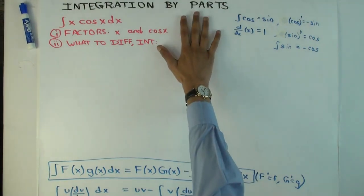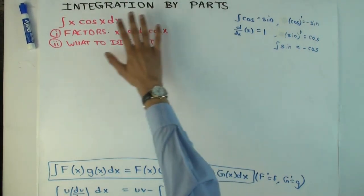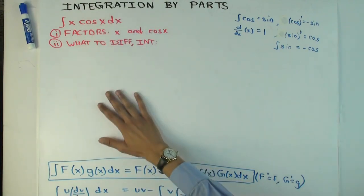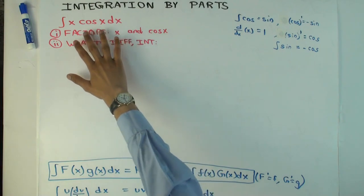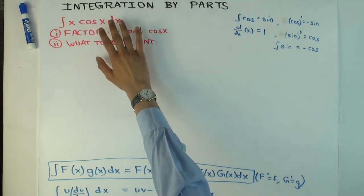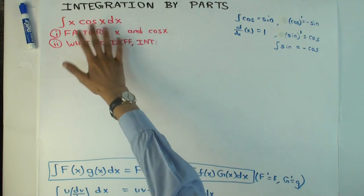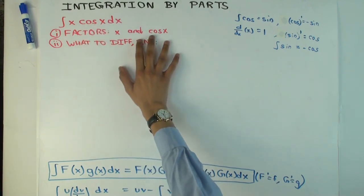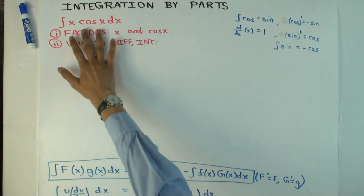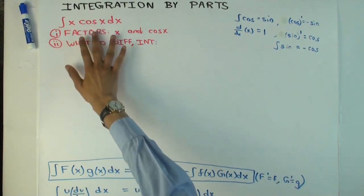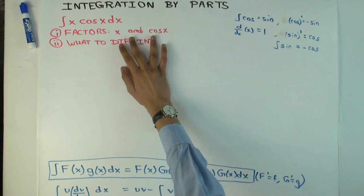In this talk, I'm going to do integration by parts, illustrated with a specific example — a simple example done very explicitly. The example is this: the integral of x times cosine x dx. To begin integration by parts, the first step is to identify what the factors are, which in this case is pretty easy: the factors are x and cosine x.